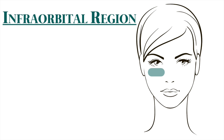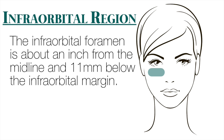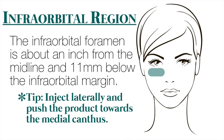In the infraorbital region, the infraorbital foramen is about an inch from the midline and 11 millimeters below the inferior orbital margin. Injecting laterally is way safer, then pushing the product medially towards the medial canthus.